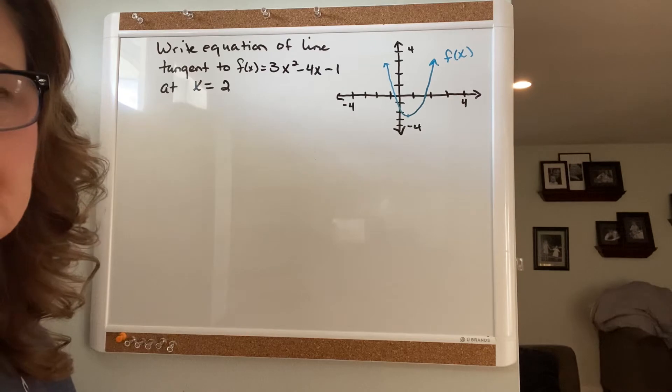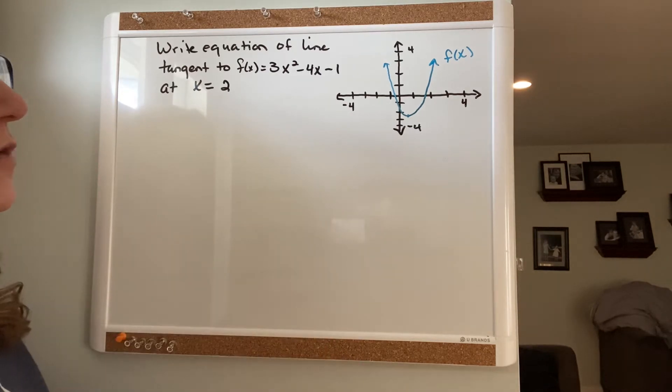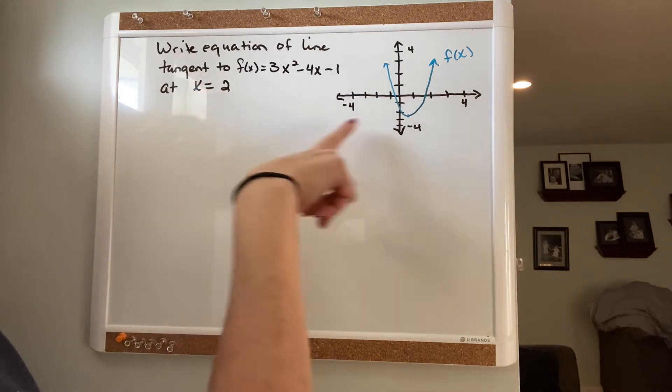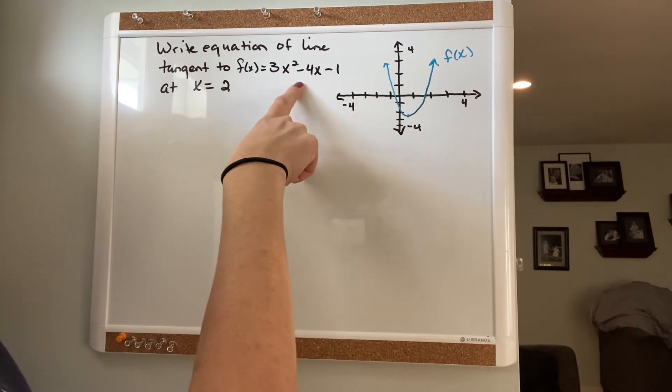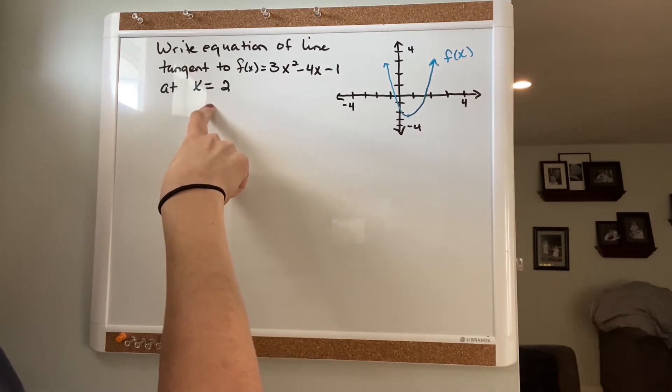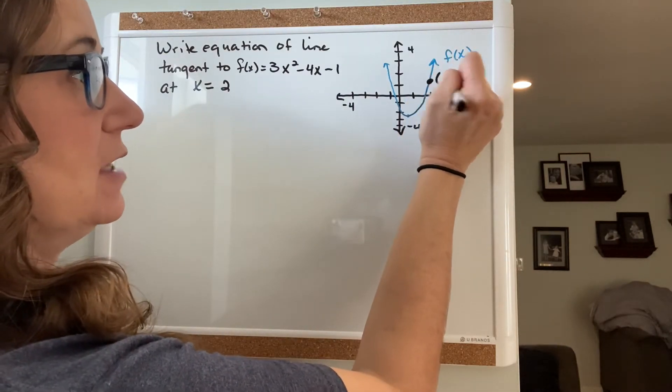Alright, so let's start. The first thing I want to do is go back and review. If I gave you this problem, which you should be able to do: write the equation of a tangent line to this curve f(x) = 3x² - 4x + 1 at x = 2. So at x equals 2, that's going to be somewhere right here, 2 comma something. We want to write the equation of a line tangent to this curve at x = 2.